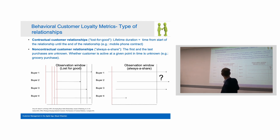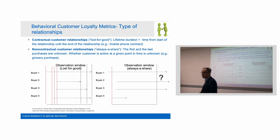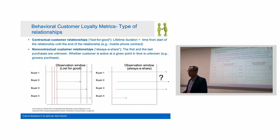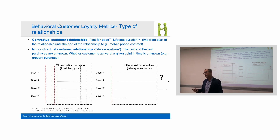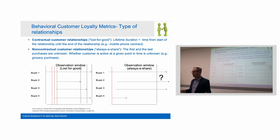As you can see, there are always-a-share different buyers, and we don't know when they bought the first time. The easy way is to consider the first purchase as the day when the customer takes the loyalty card. In electronic commerce, it's easy: the day when the customer creates the account and buys the first time is considered the first purchase.